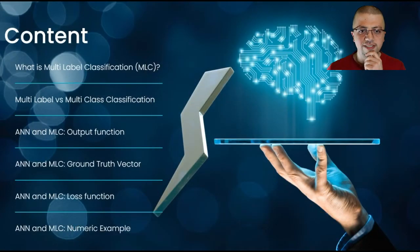So let's just go over the content for this video series. First, we're going to talk about multi-label classification and what it is, and then we'll talk about multi-label classification versus the classical multi-class classification. Then we'll talk about artificial neural network and multi-label classification - how should it define the output function, the ground truth vector, and the loss function.